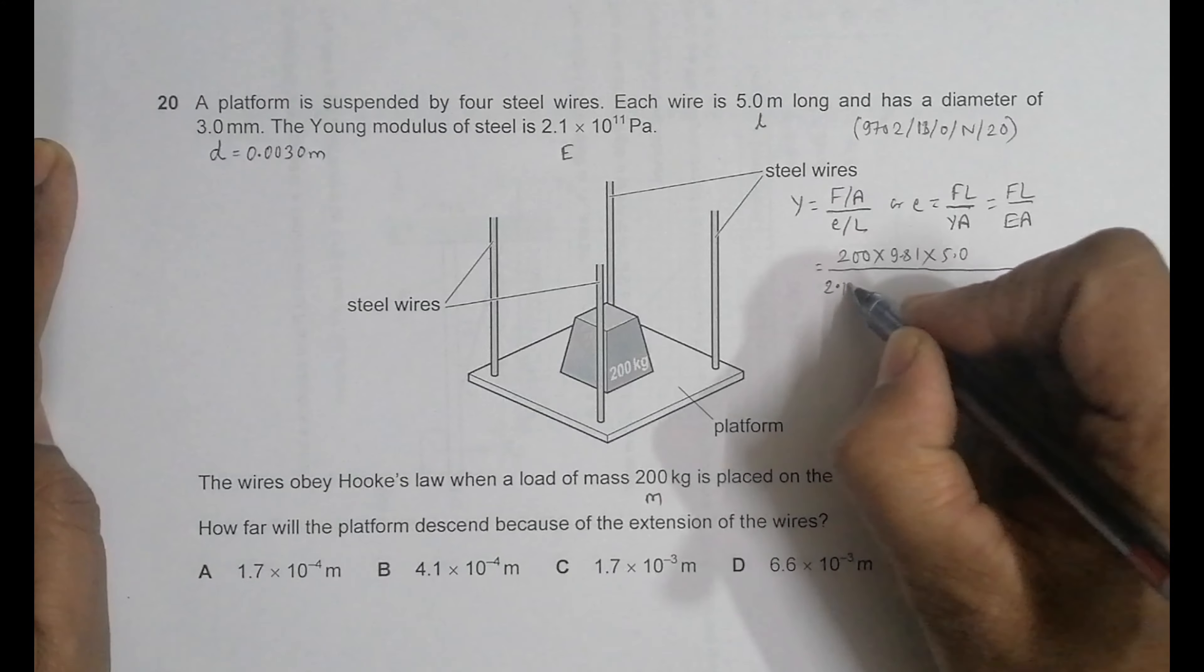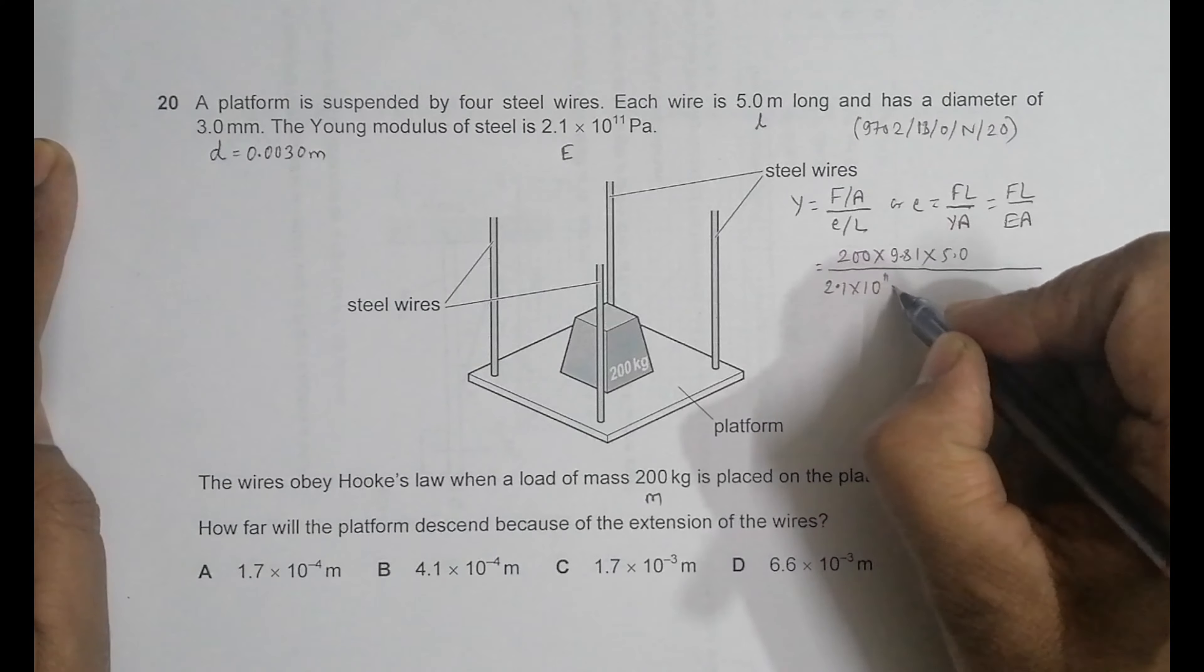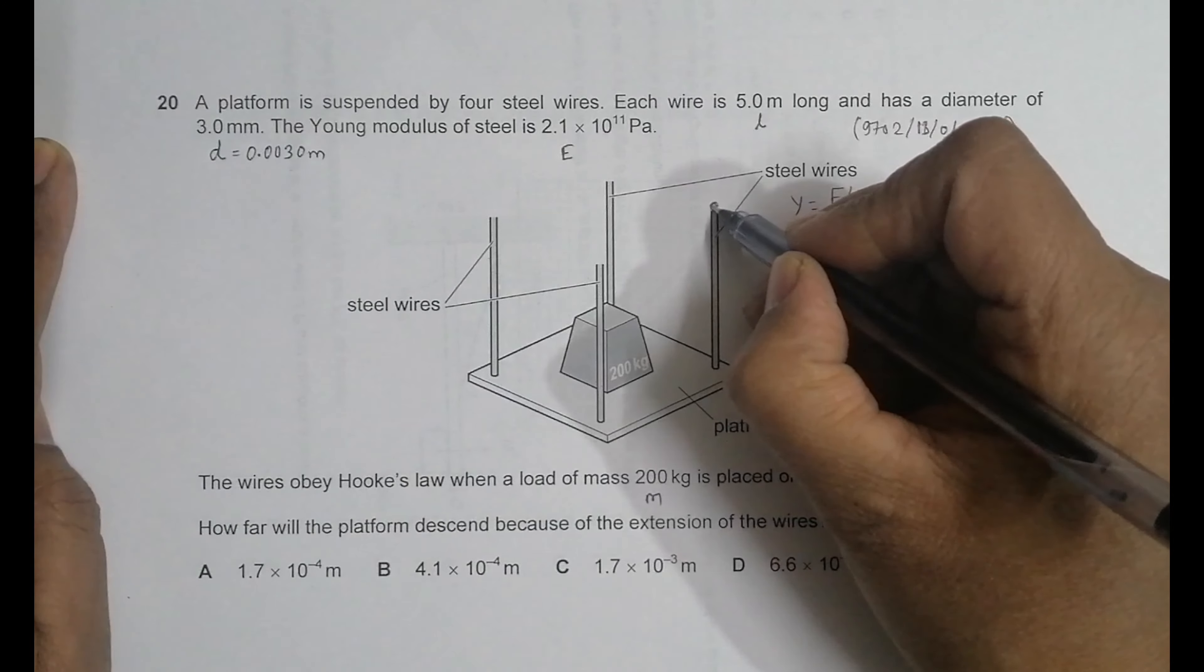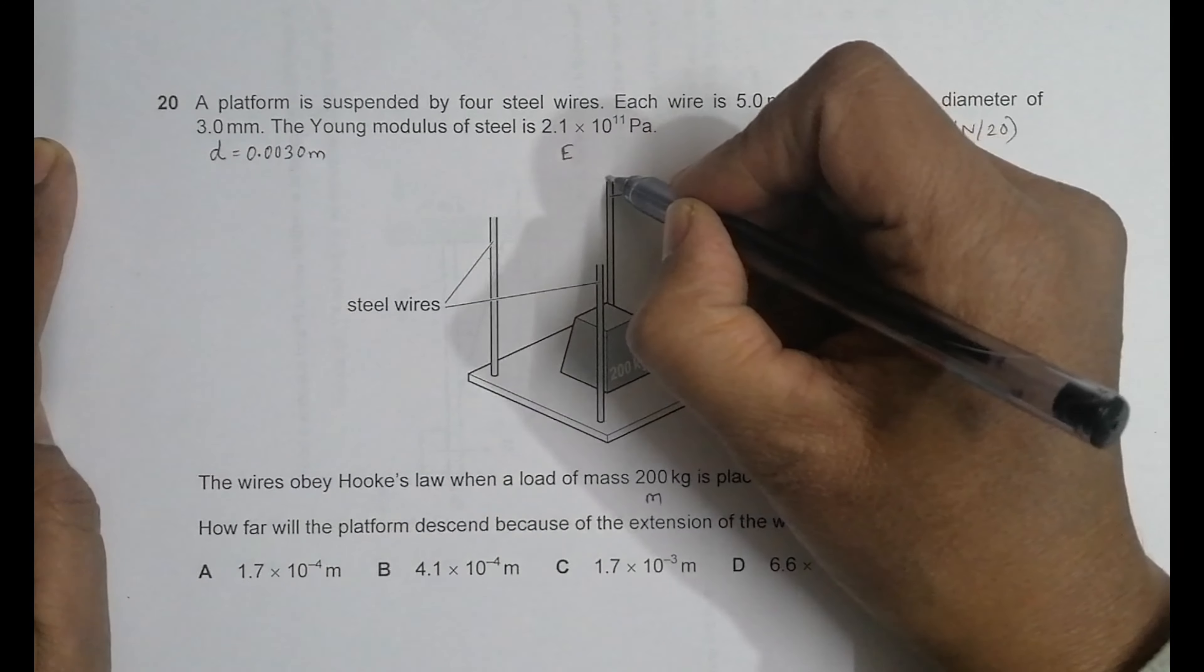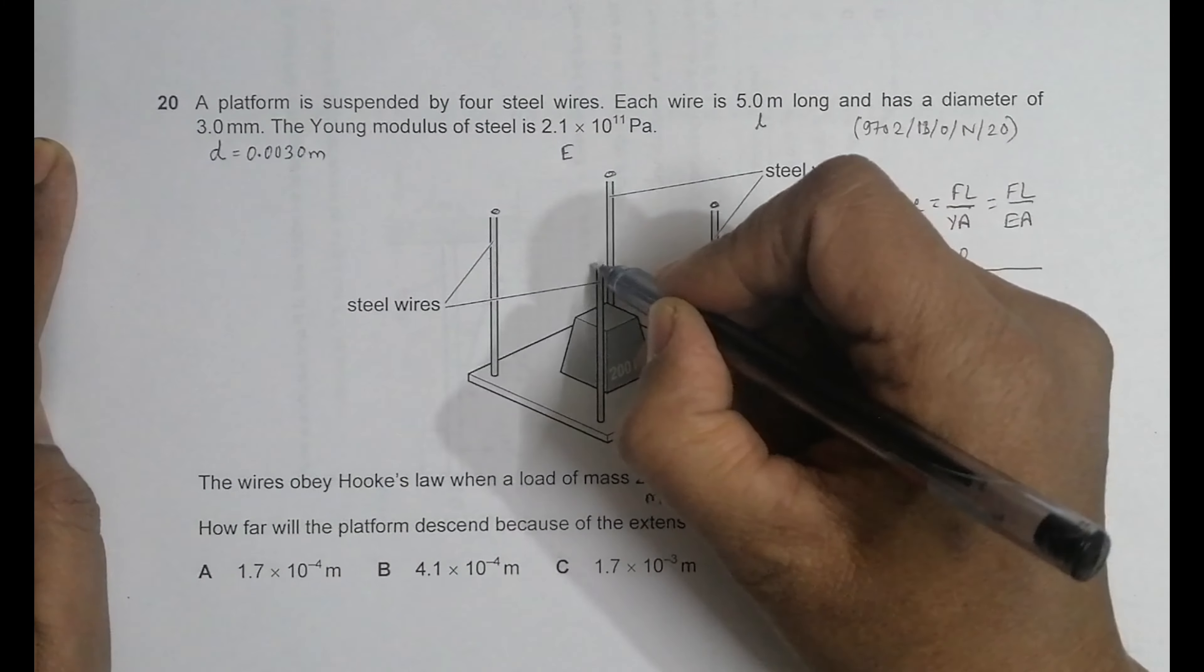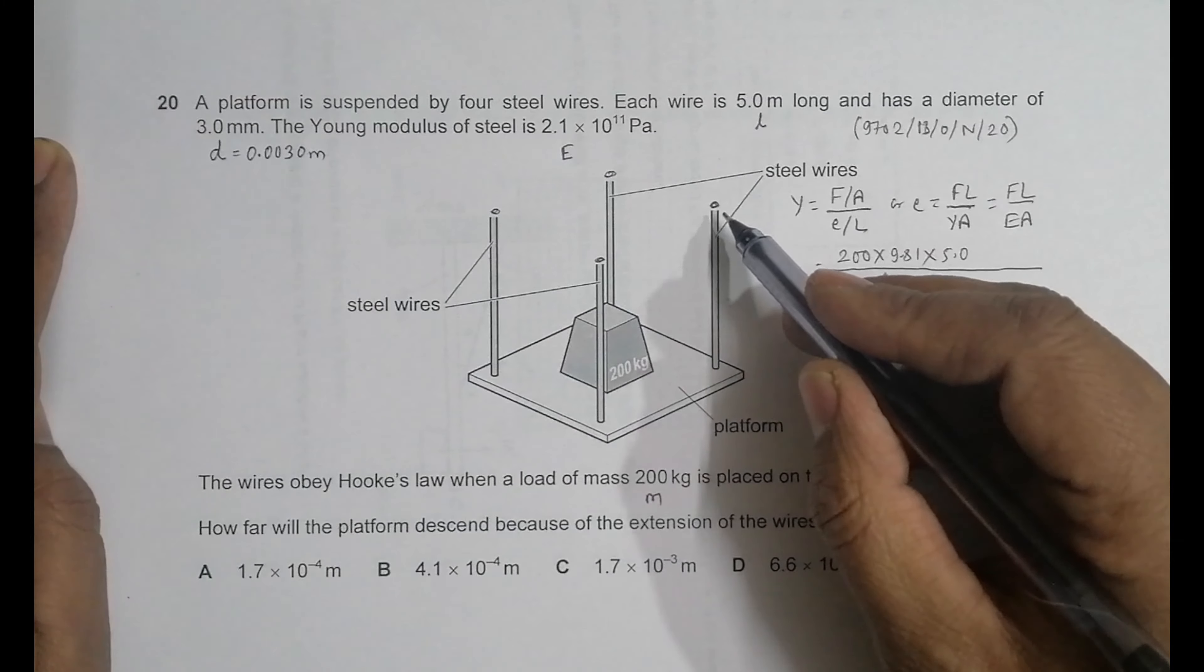Now the cross-sectional area is for one wire, but we have four of these wires. The total cross-sectional area will be four times the area of one wire.